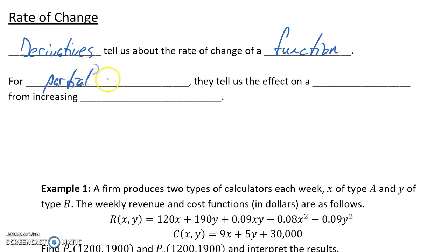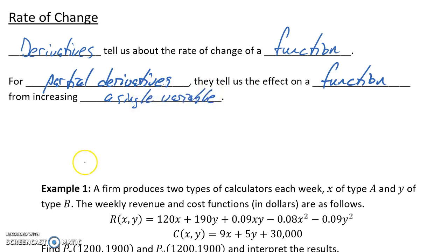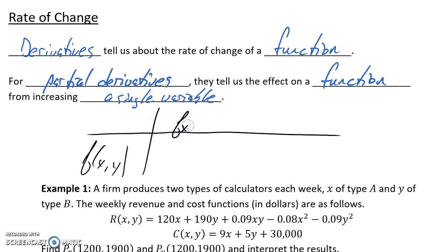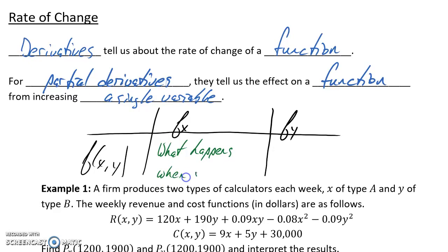For partial derivatives — meaning derivatives of multivariable functions — they tell us the effect on a function value from increasing a single variable. For some given function f(x, y), we can calculate f sub x, the partial derivative with respect to x, or f sub y, the partial derivative with respect to y. f sub x would tell us what happens when x increases, and f sub y would tell us what happens when y increases.